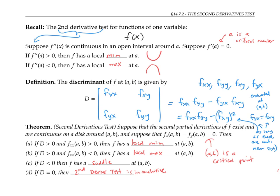And if the discriminant is zero, then the second derivatives test is inconclusive. The function could have a local minimum, a local maximum, a saddle, or none of these features.